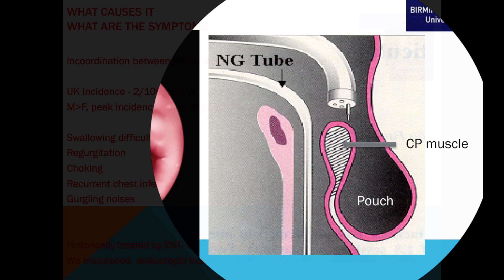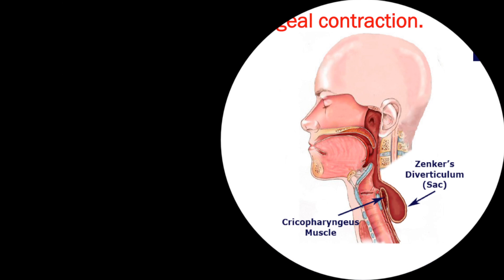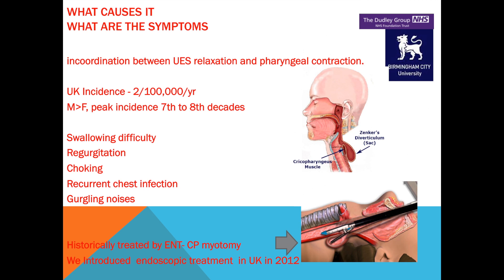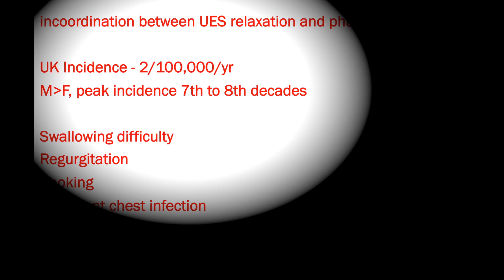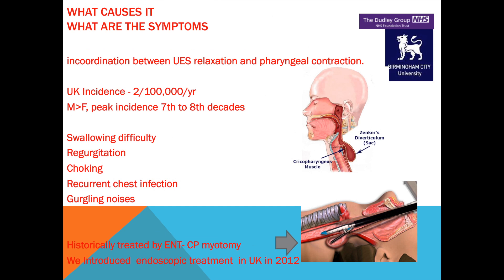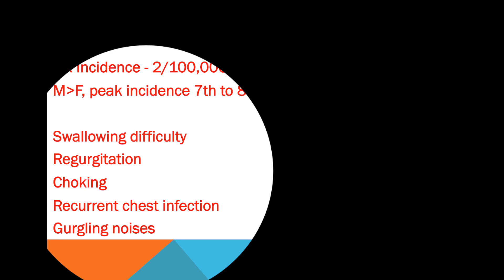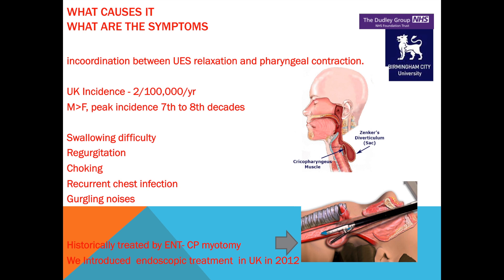What causes the pharyngeal pouch, and what are the symptoms? We do not have a deep understanding of what makes a pouch, but it is poor coordination of the cricopharyngeus muscle that causes the top of the food pipe to go into spasm, hence the food tracks backward and makes a back pouch — a pharyngeal pouch. The incidence, fortunately, is low, and it usually affects patients in the seventh and eighth decade, though we are increasingly seeing patients at younger ages. Predominant symptoms are swallowing difficulty, food regurgitation, recurrent chest infection, choking — which patients find very distressing — and a gurgling noise in the neck. These symptoms can trouble patients after a meal or at bedtime, and they do have a significant impact on quality of life.